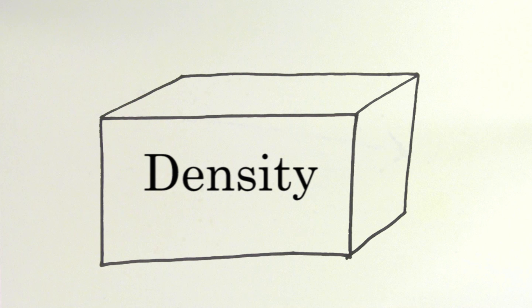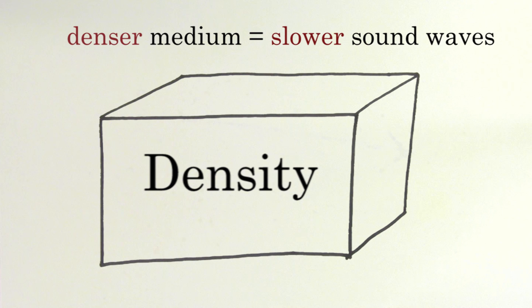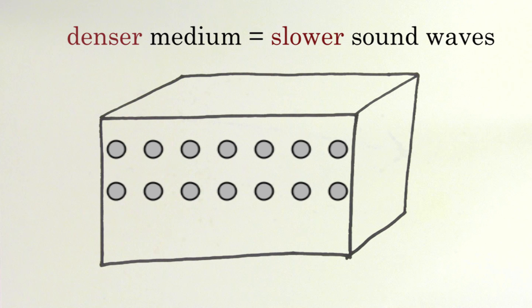The other factor that determines the speed of a sound wave is the density of the medium. The more dense the medium, the slower the sound wave will travel through it. This makes sense because if a material is more massive, it has more inertia, and therefore it's more sluggish to changes in movement or oscillations.